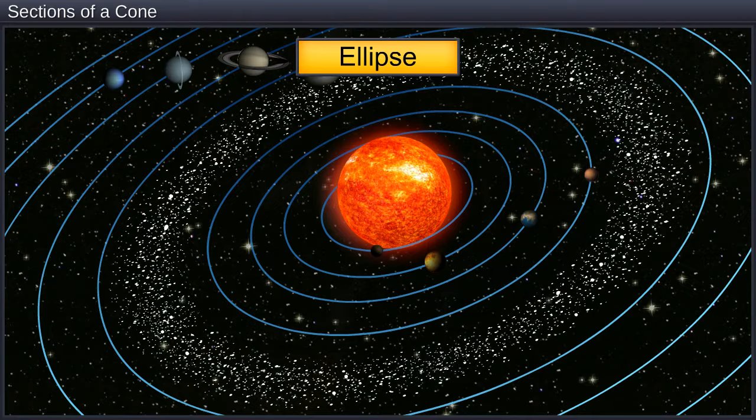The ellipse is used extensively for studying planetary motion and making advanced reflectors for automobile headlights.